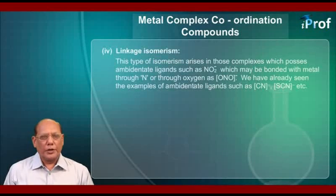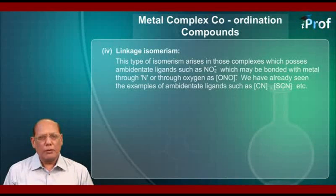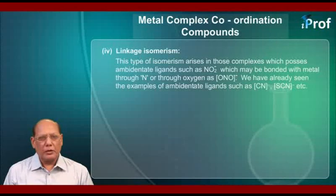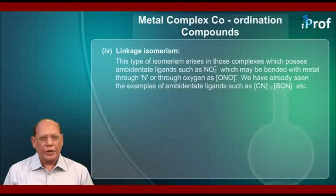Fourth, linkage isomerism. This type of isomerism arises in those complexes which possess ambidentate ligands such as NO2- which may be bonded with the metal through nitrogen or through oxygen as ONO- and NO2-. We have already seen the examples of ambidentate ligands such as CN-, SCN-, etc.